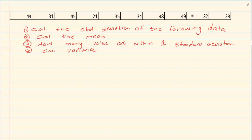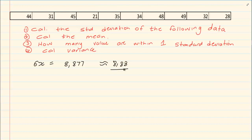Then press AC, then Shift and 1. We are looking at number 4 which is variance. After pressing variance you will see options 1 through 4. We are looking for the sign that means standard deviation — on my calculator it is number 3. Our answer is 8.877, so rounded off our standard deviation is 8.88.